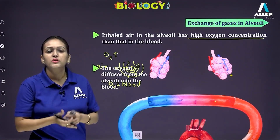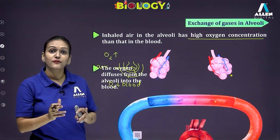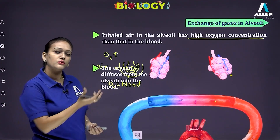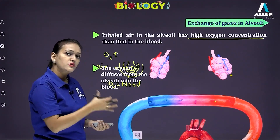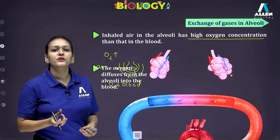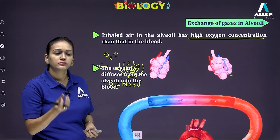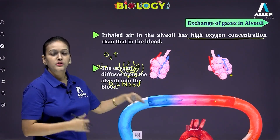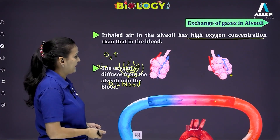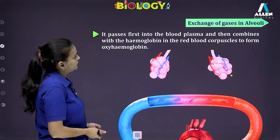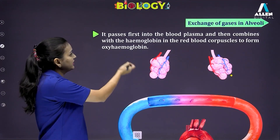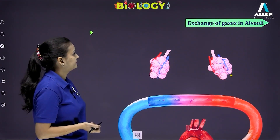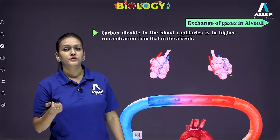Oxygen initially moves into the blood plasma, and then within the blood there are red blood cells containing the oxygen-binding hemoglobin pigment. Hemoglobin has very good affinity for oxygen gas, so oxygen from the plasma moves into the RBC and binds with hemoglobin to form a temporary compound — oxyhemoglobin — and in this form most of the oxygen gets transported to the entire body.